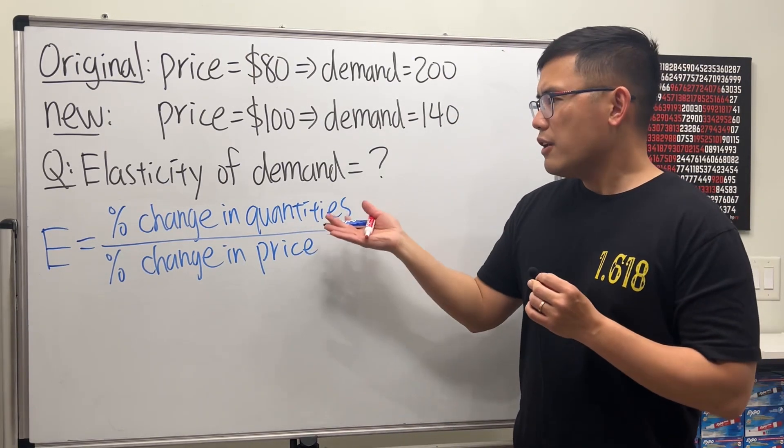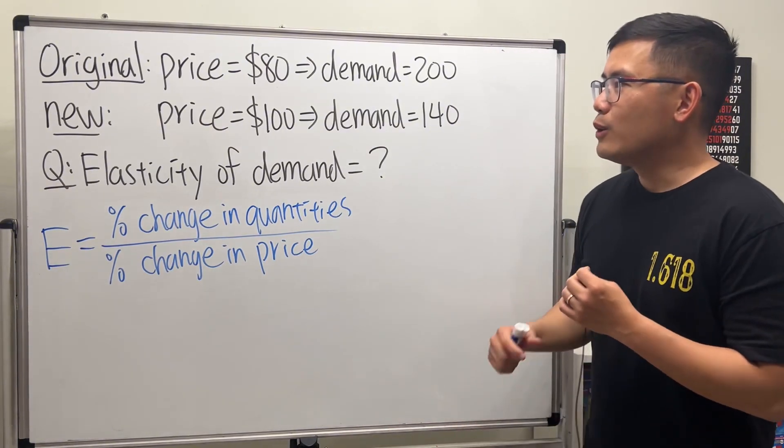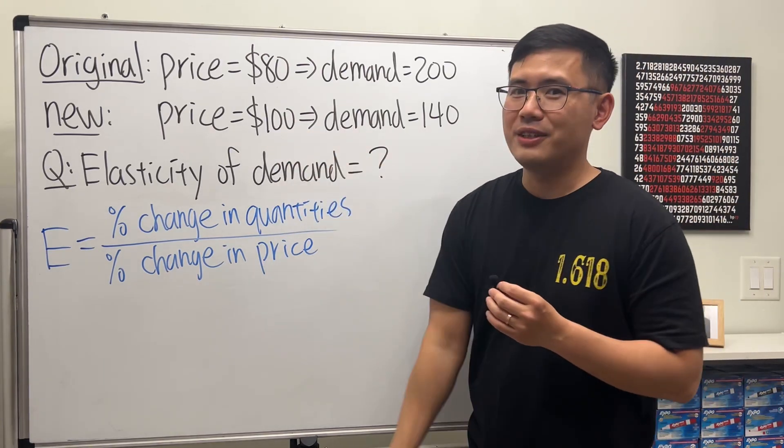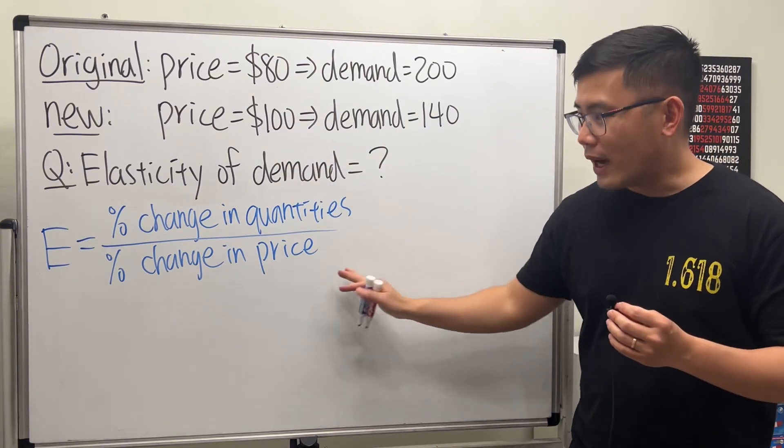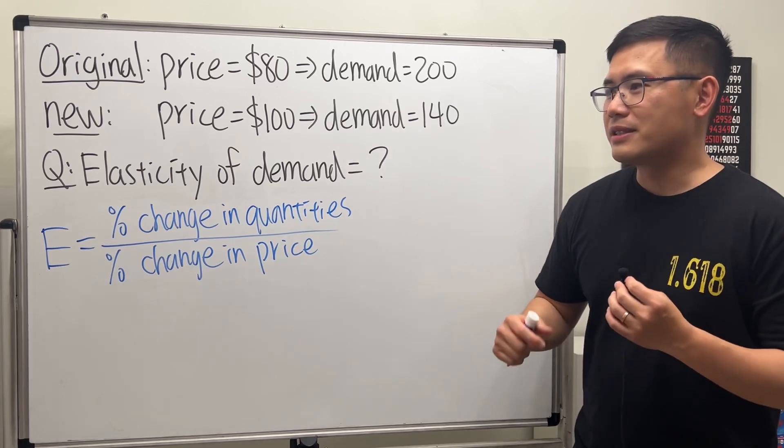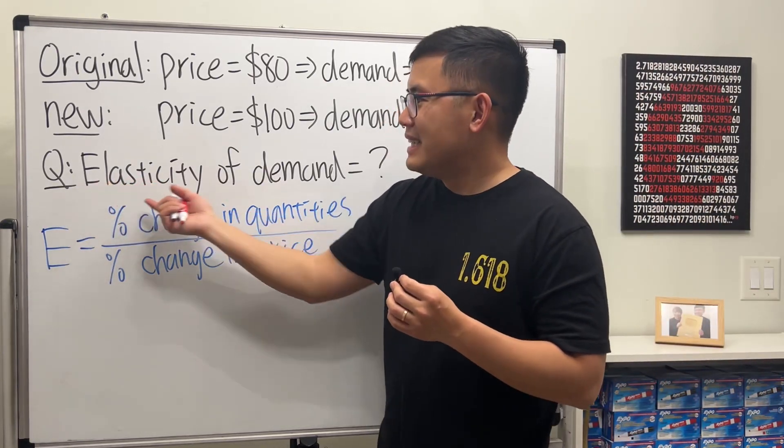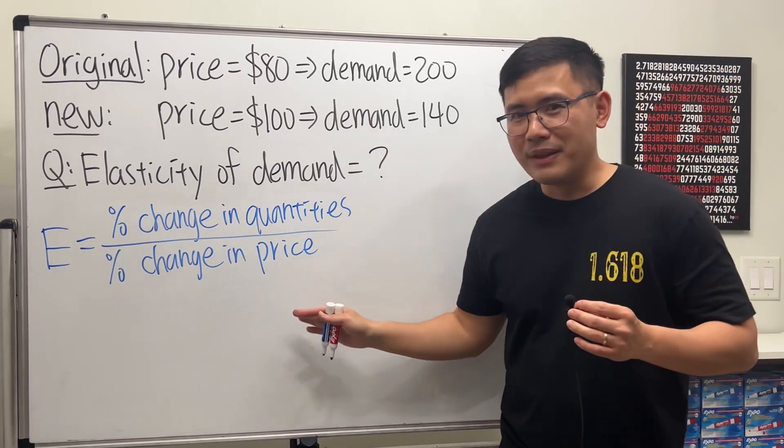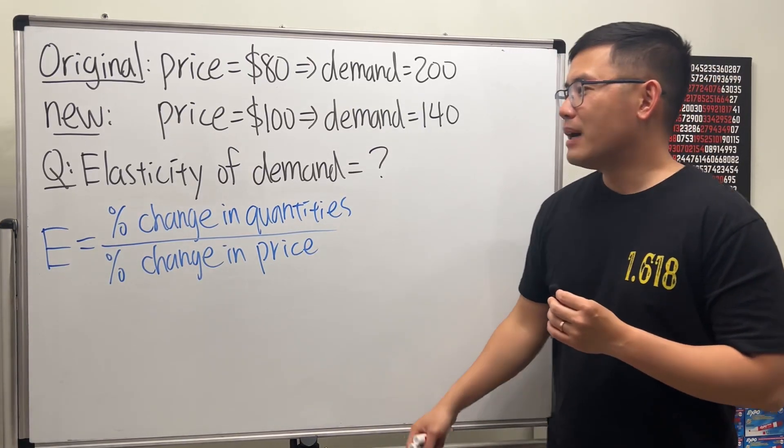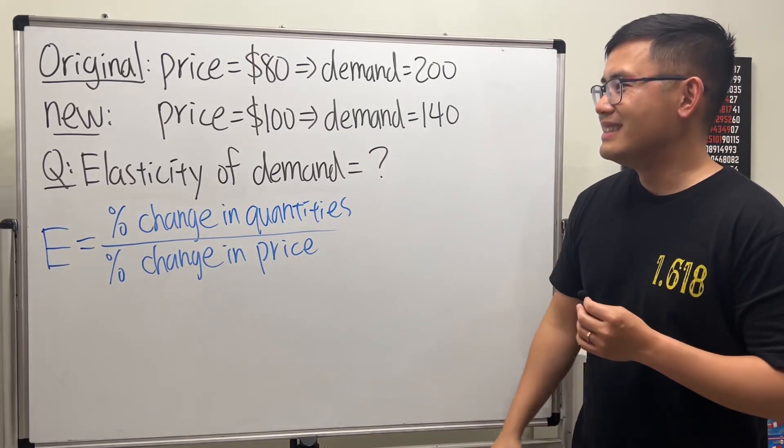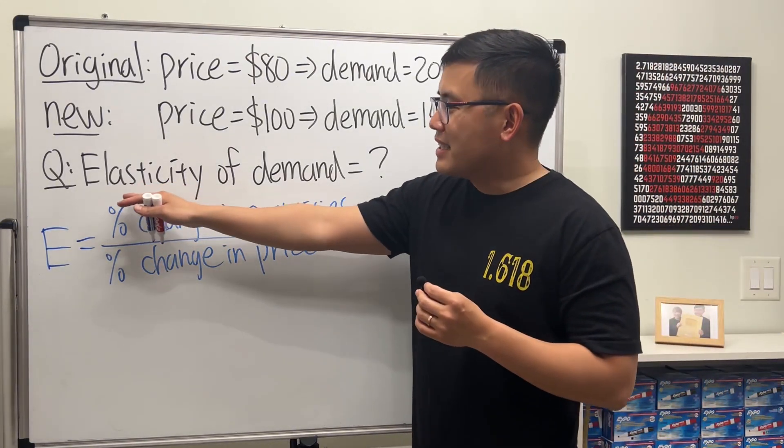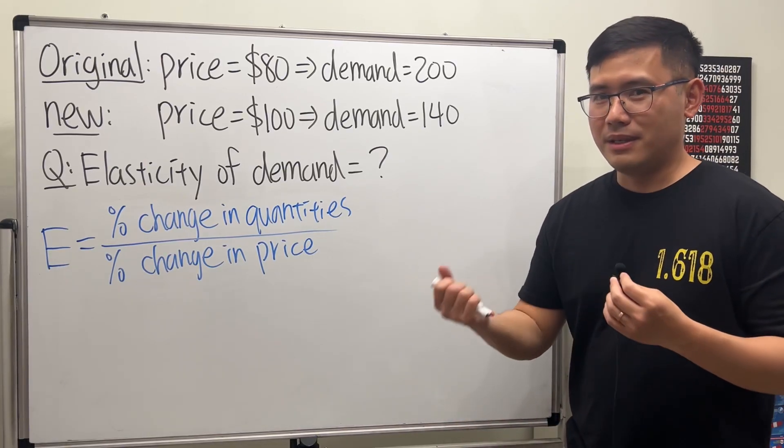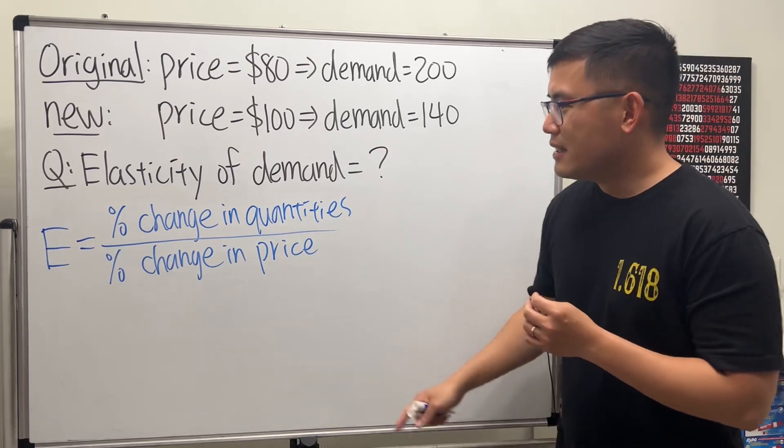The idea of the elasticity tells you how drastic the demand will be changed according to your price change. If it's less than one, this situation is called inelastic. If the E number is greater than one, then the elasticity of demand is called elastic. That means it's going to be a bigger stretch.